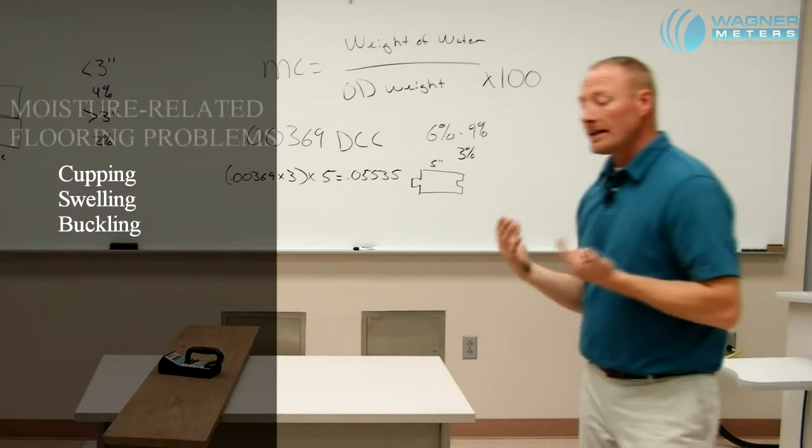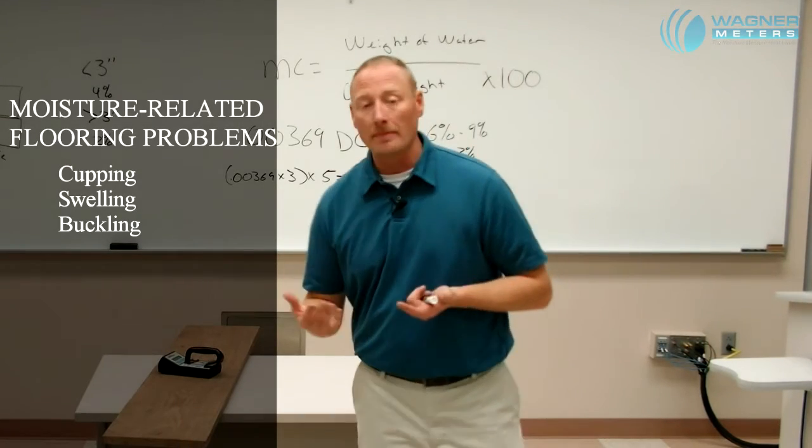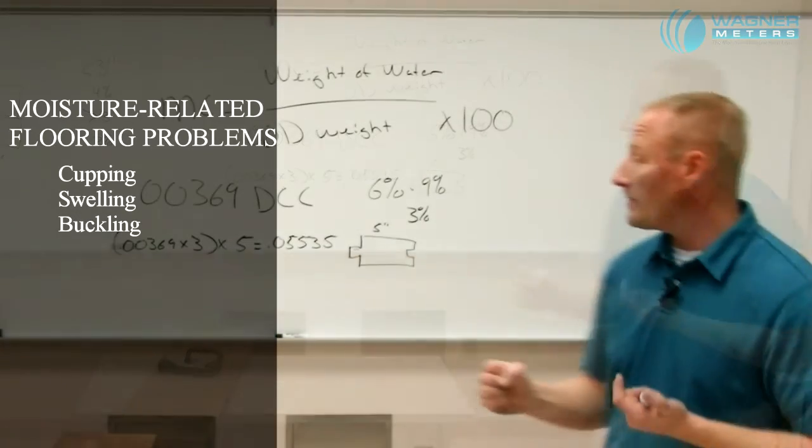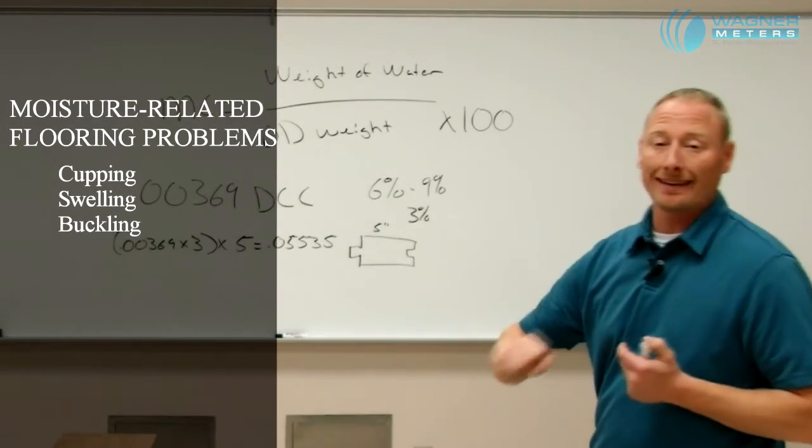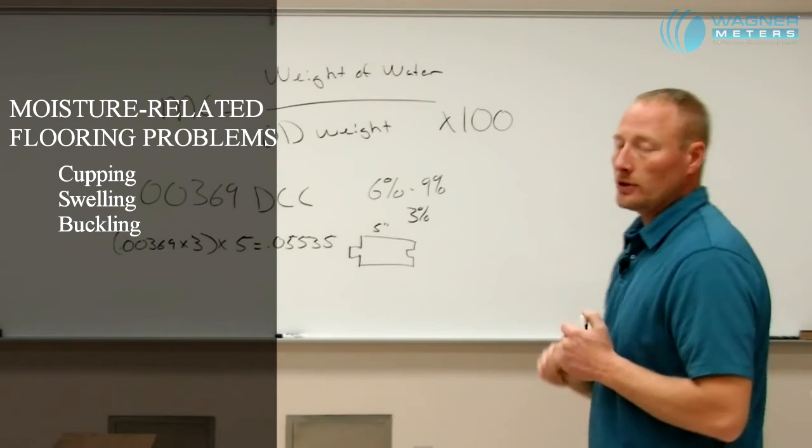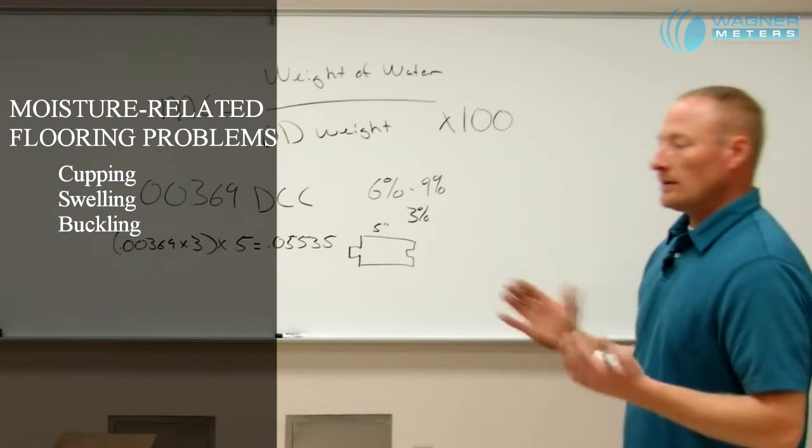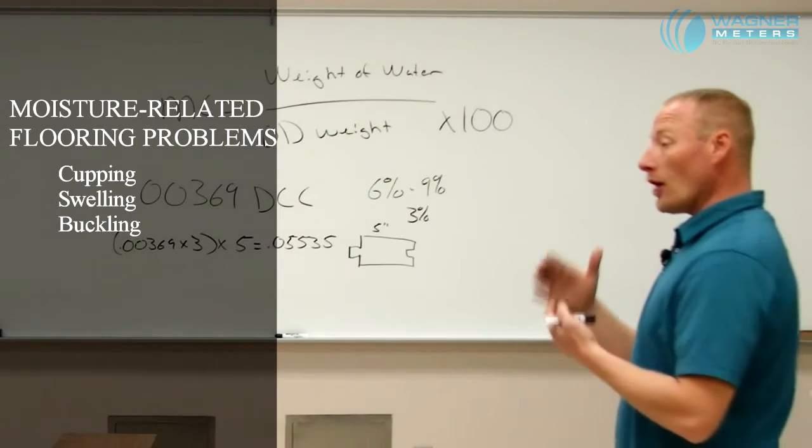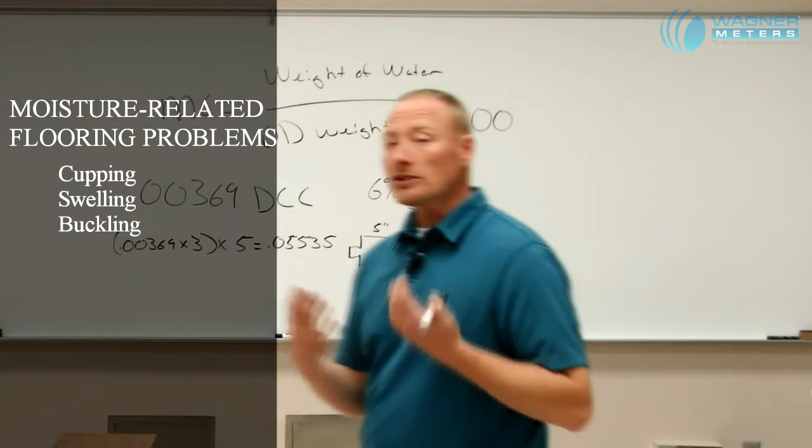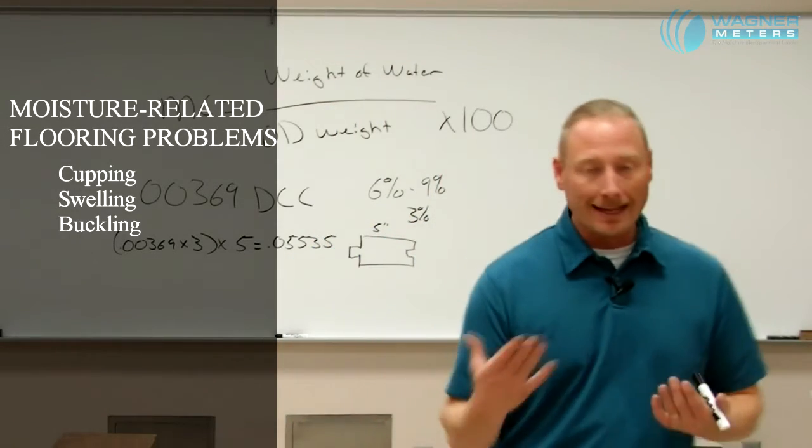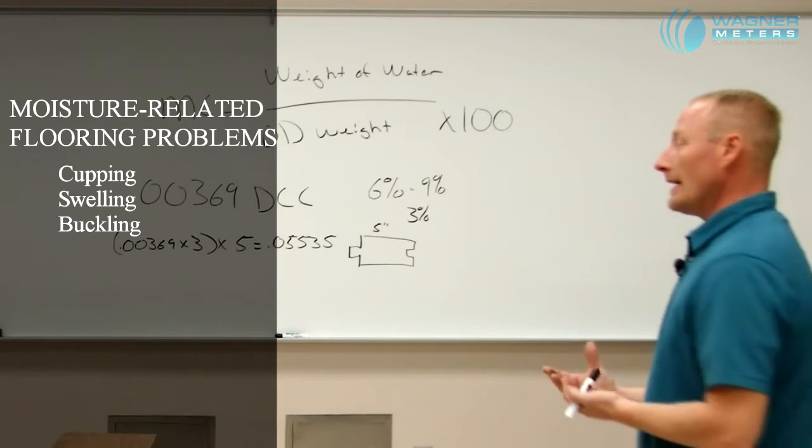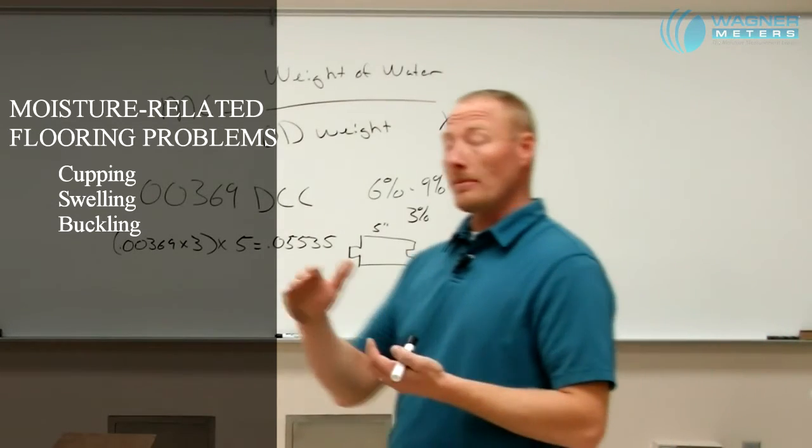A general recommendation is concrete or a slab that has been poured less than 30 days is going to have a moisture content that is too high to adhere a floor to. So anything under 30 days old, we want to stay away from. Anything over that, that's when we can actually start taking measurements or think about applying a wood flooring to that. That does not mean that that moisture content still may not be too high.